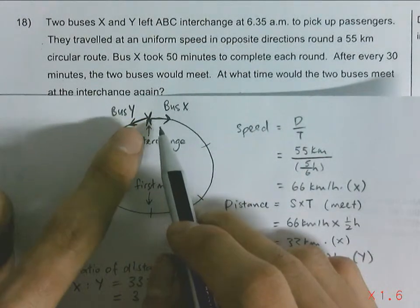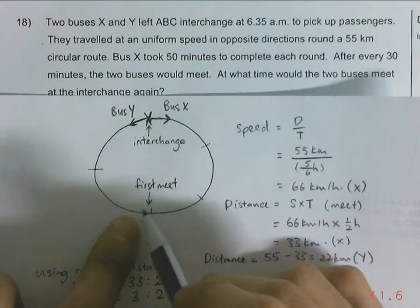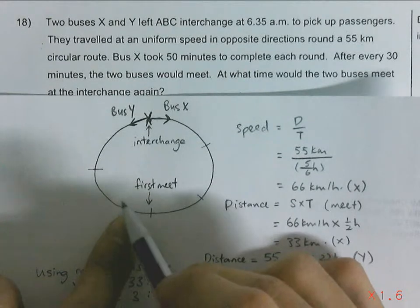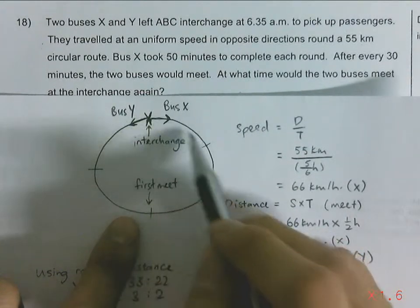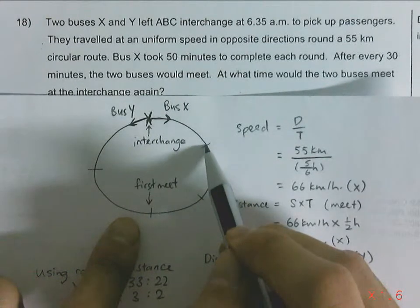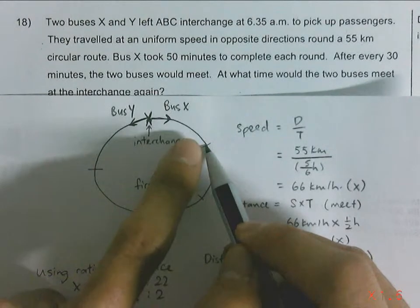So after they have met, Bus X will continue this way for 3 units. 3 is to 2, so 3, 1, 2, 3, comes back to here. So Bus Y will continue moving here. So 1 and 2. So the second meet will be here.